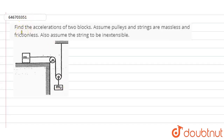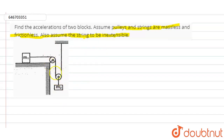In this question, we need to find the accelerations of two blocks. Assume the pulleys and strings are massless and frictionless, and the string is inextensible. The two blocks are connected to two different pulleys. Mass m1 is placed on a horizontal frictionless surface, and the strings are massless.